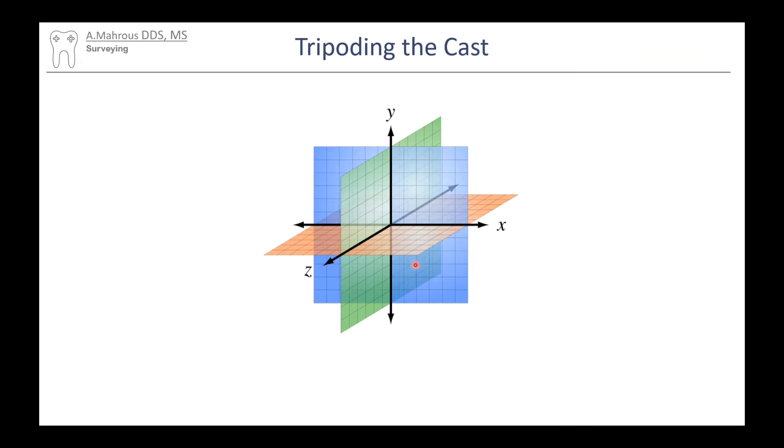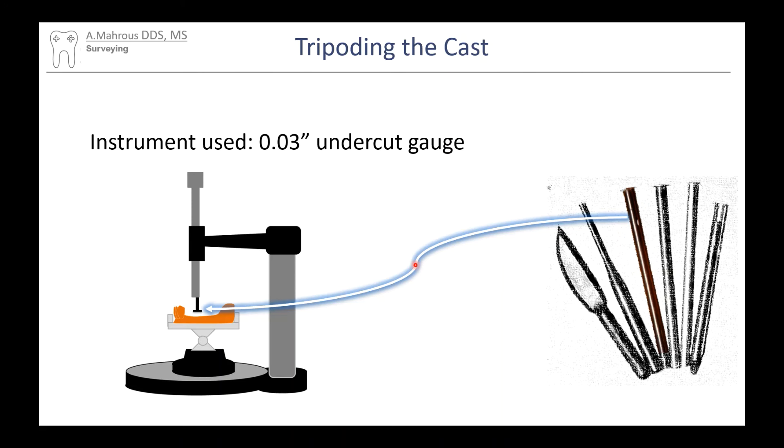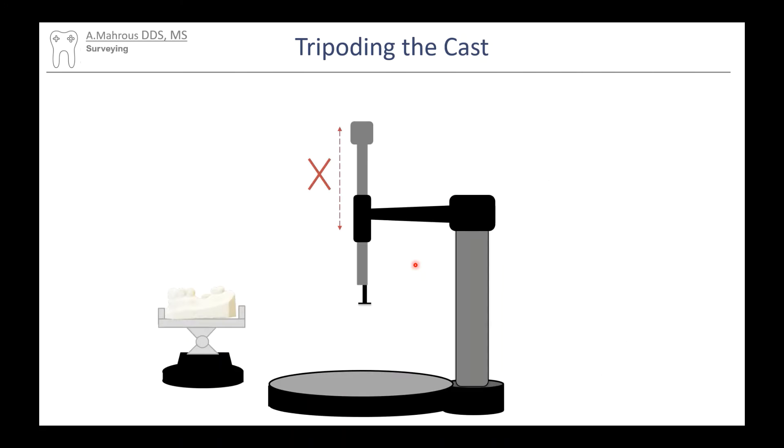Tripodding is the last step you do after surveying, and it acts as a safe point, or in other words, a way to return your cast to the specific tilt you had it in when you were surveying after you've changed the position of the table. For this, we will be using the 0.03 undercut gauge. You'll put that on the mandrel. Once you're ready to tripod, you're going to set the mandrel at a fixed height, meaning you are not going to be moving that mandrel up and down anymore.